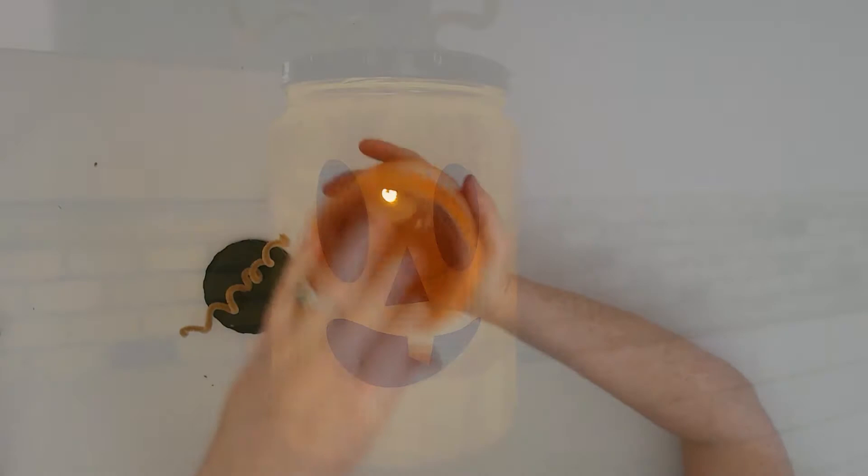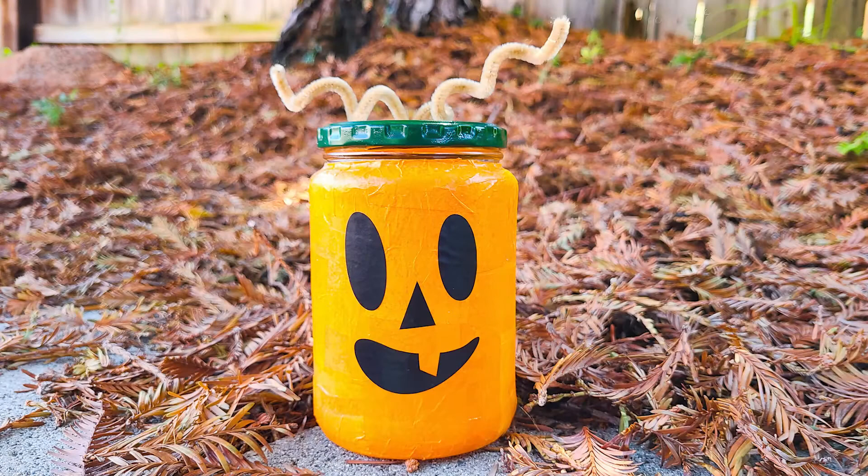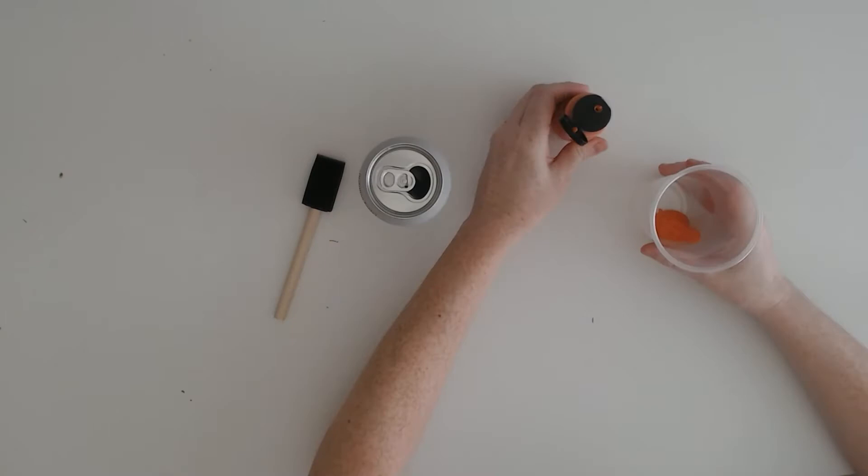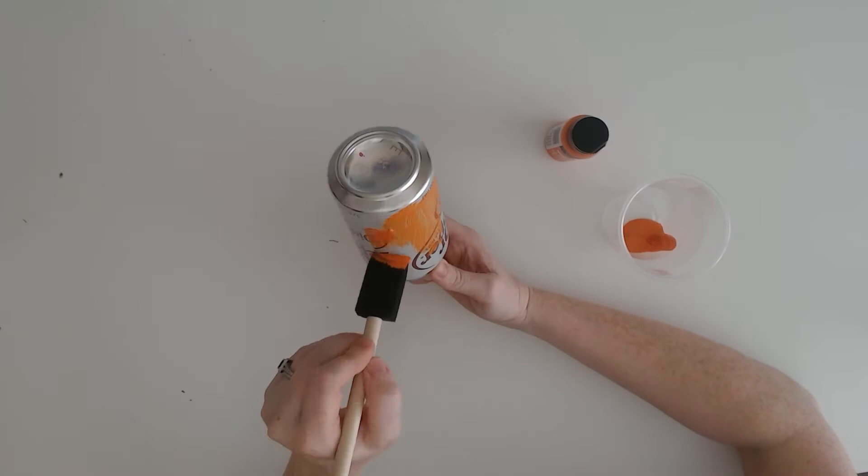The last craft we're sharing uses an aluminum can that we're painting orange. Acrylic paint will adhere to the can, but you're going to need a lot of coats to get it to cover up the label. Look at this one, I have a lot of paint on it and you can still see through the paint.